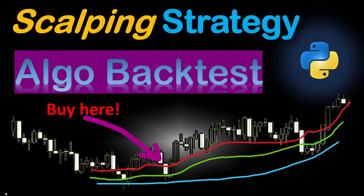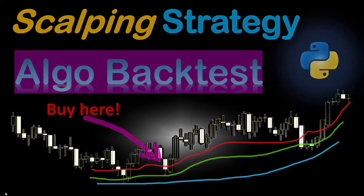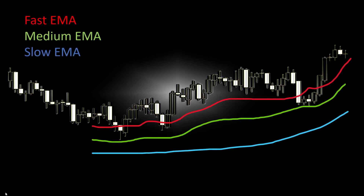As a start I chose something relatively simple. We will be using three exponential moving averages: one is fast, the other one is medium, and the third one is slow. We're going to use these moving averages to detect our trend. When these are aligned in a certain order, like fast above medium above slow moving average, then we have an uptrend, and the opposite order indicates a downtrend.